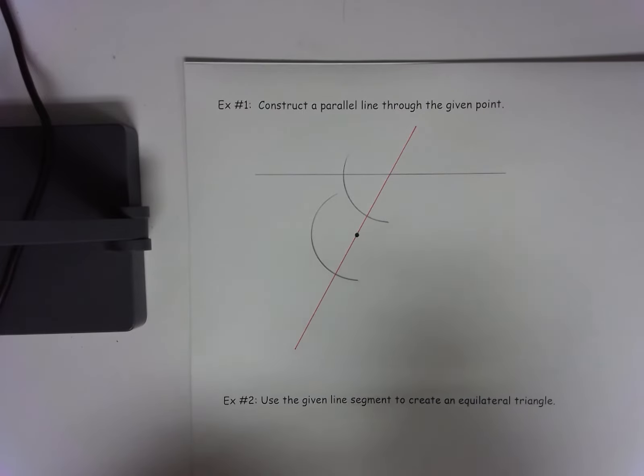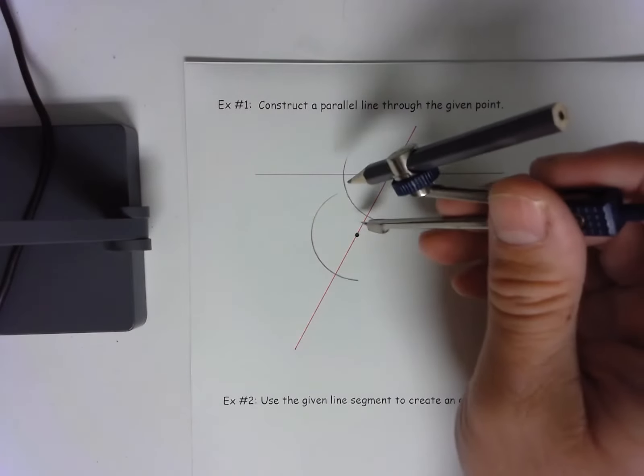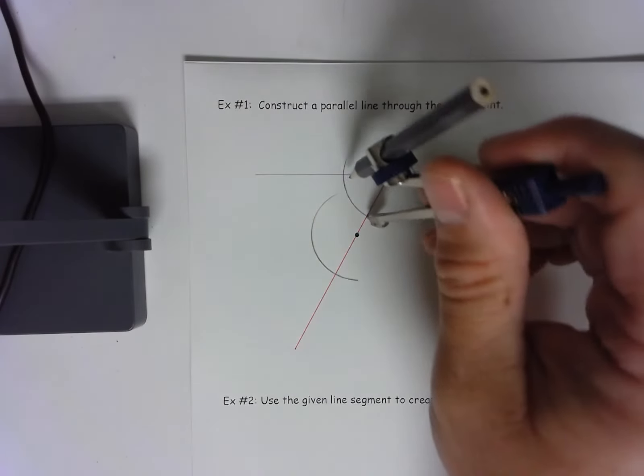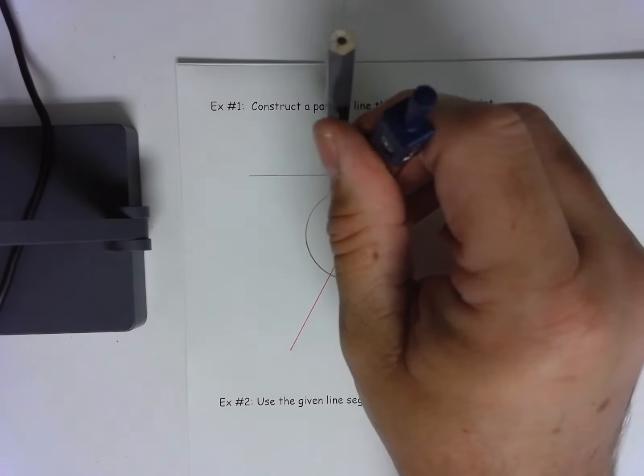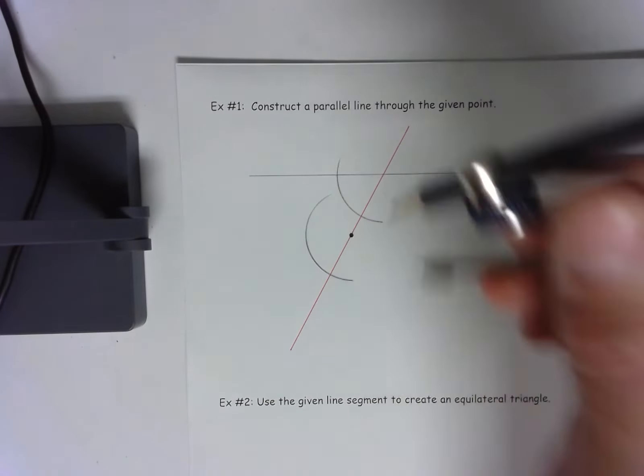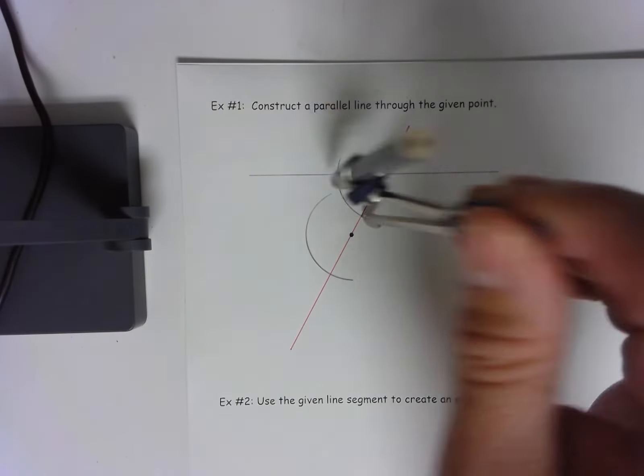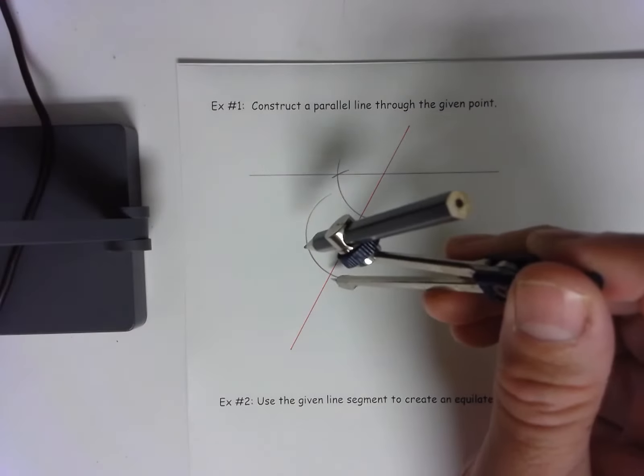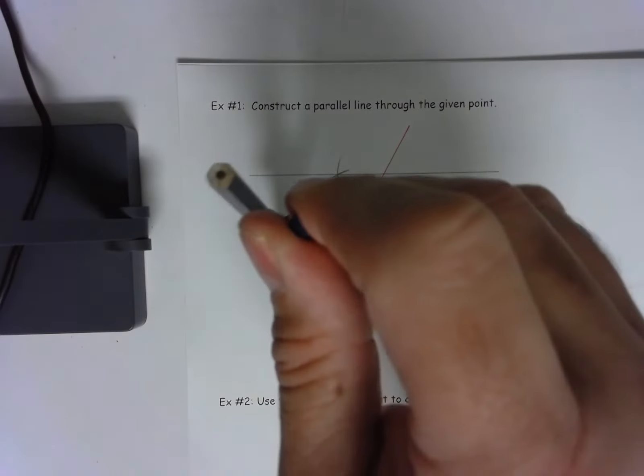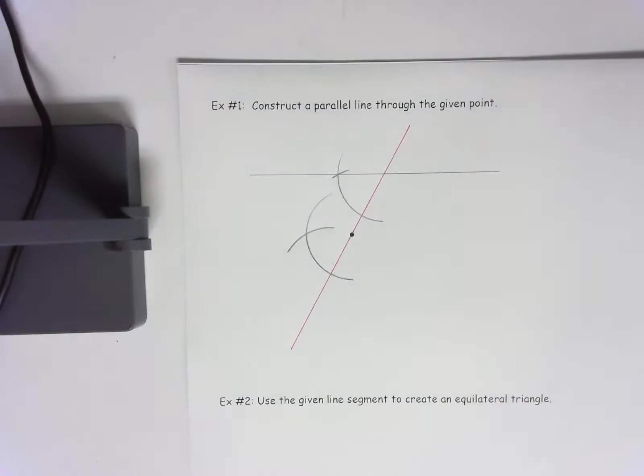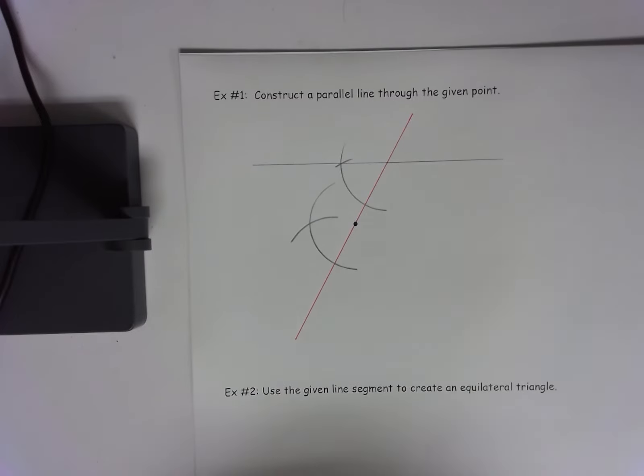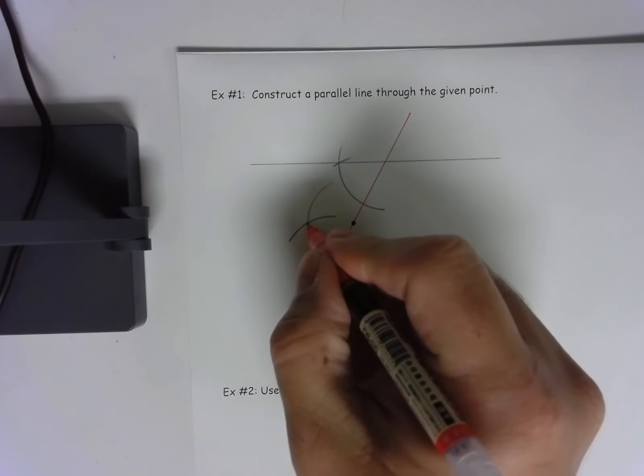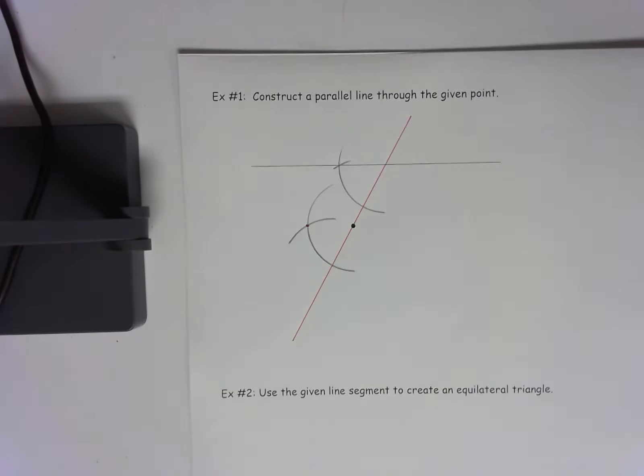Now what I'm going to do is take from the transversal to the side I met, match up so I have the distance. Swing my cut, come here, swing my cut. Because that point now and the point we were given will form a line that is parallel to the original.